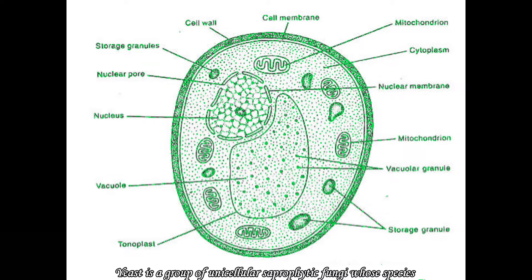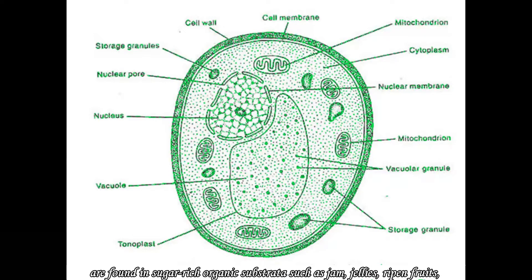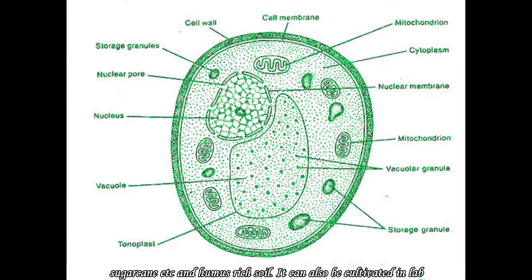Yeast is a group of unicellular saprophytic fungi whose species are found in sugar-rich organic substrata such as jam, jellies, ripened fruits, sugarcane, and humus-rich soil. It can also be cultivated in a lab by providing favorable environmental conditions.